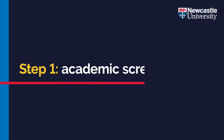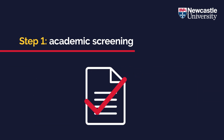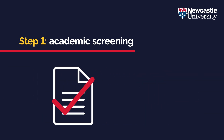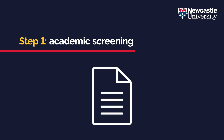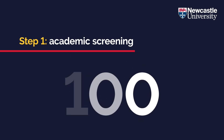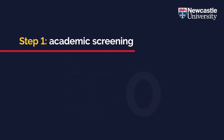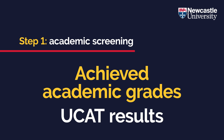Step one: academic screening. In the first step, all applicants are screened to assess whether their predicted or actual academic results meet the minimum entry requirements. Candidates who do not meet the screen predicted grades will not be considered further. We will then score all applicants out of 100 based on two key factors: achieved academic grades and their UCAT results.